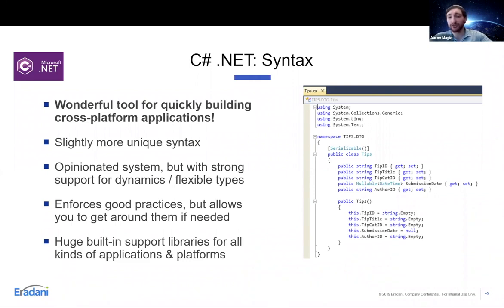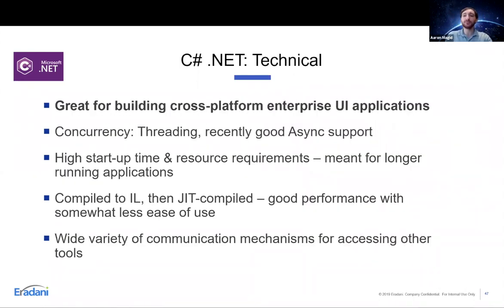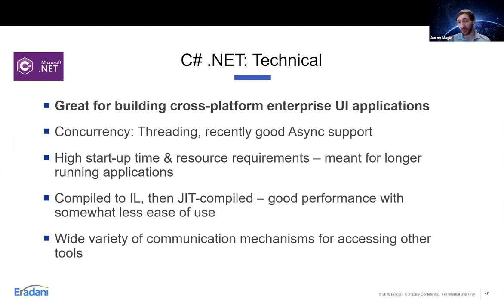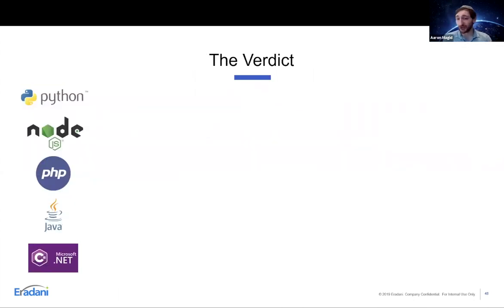Less opinionated than Java, .NET is great for building cross-platform UI applications — that's really what it's built to do. From a technical standpoint it's more in the Java vein than the JavaScript or Python vein. It does require significant resources and is designed for longer-running applications, so when talking about UI applications and web servers it's a great language; for small automation scripts or devices with very restricted resources, not necessarily the tool you want to go with.